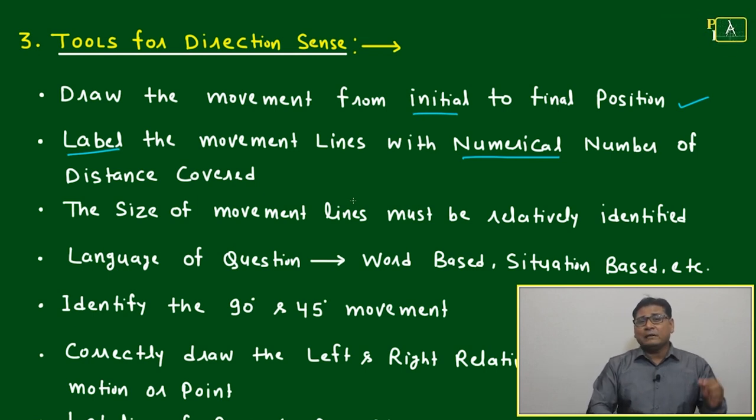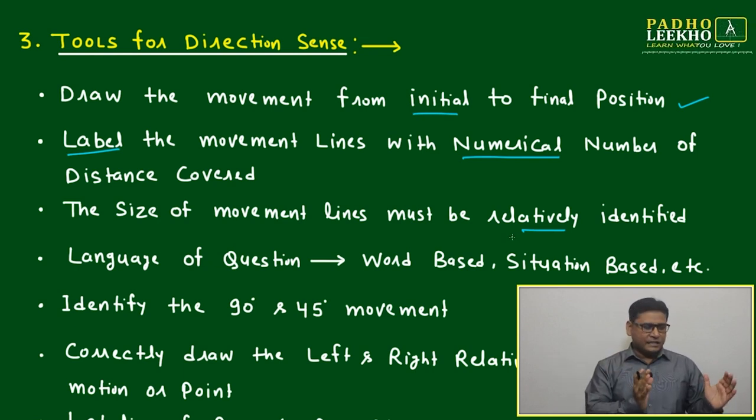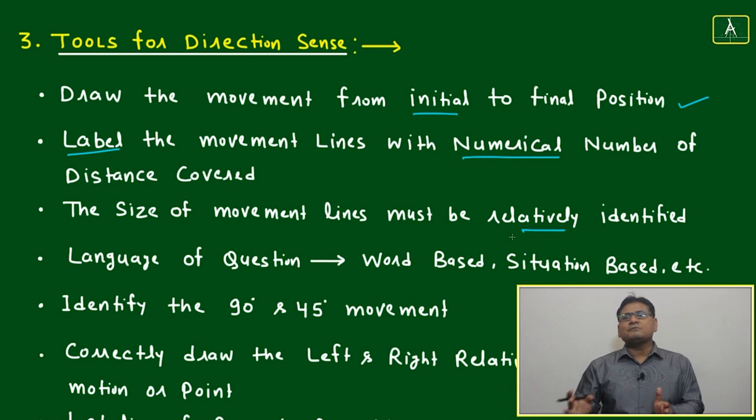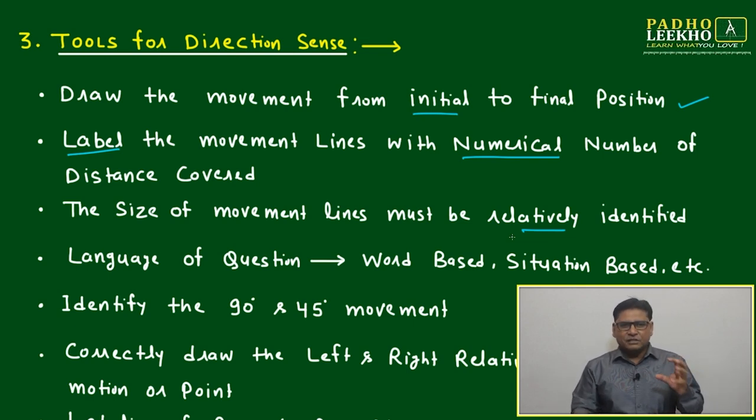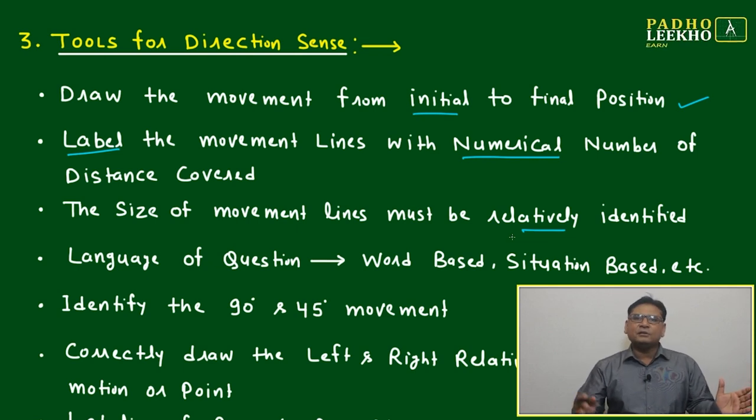Then it will be easy to make a right angle triangle and it will not cross from some awkward point where we will not be able to understand which type of triangle is formed. The size of movement lines must be relatively identified - like 10, 5, 7 - then 10 will be biggest, 7 will be afterwards, 5 will be smallest. That minute difference, no need to worry, but just visually anybody can identify.